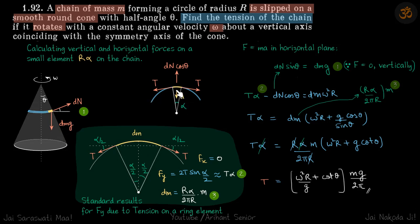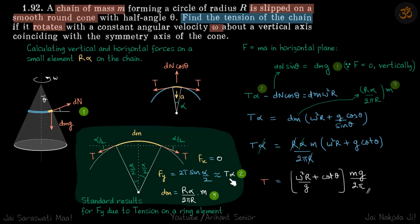One thing here is how do we relate this tension with DN. This is a standard result: whenever we have such elements where there is some tension in the chain, we take a small element that subtends an angle alpha with the center of the circle. So the half angle is alpha by 2, and the tension will make an angle alpha by 2 with the horizontal — this is geometry because these are tangents. So Fx is clearly 0, and the net force due to tension will be 2T sin(alpha/2). Because we have taken a very small element, alpha is very small, so we can approximate sin(alpha/2) ≈ alpha/2. The 2's cancel and that gives us T·alpha.